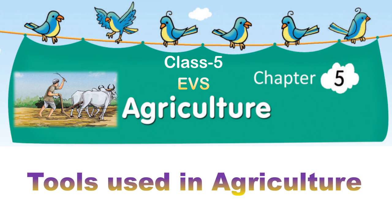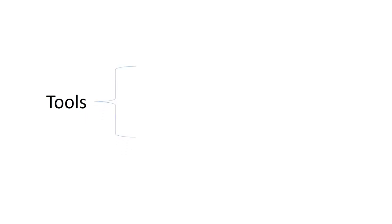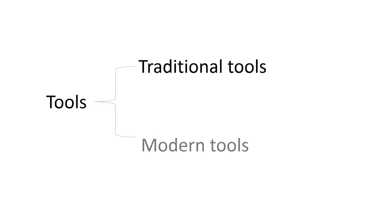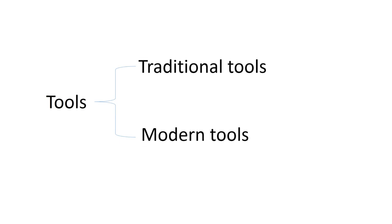Class 5 EVS, Unit 5: Agriculture. Subtopic: Tools Used in Agriculture. Tools used in agriculture are of two types. One is traditional tools, and the second one is modern tools.